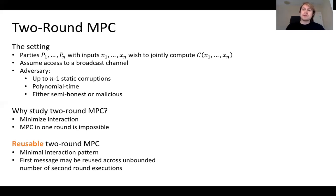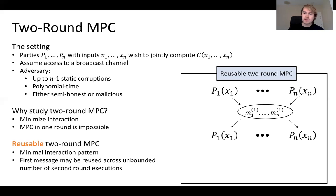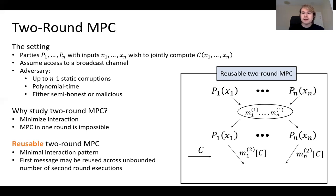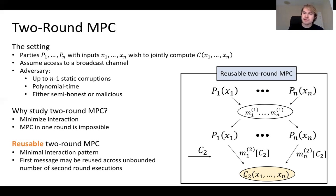Reusable two-round MPC takes minimizing interaction a little bit further. The first round message computed by the parties may be reused across a potentially unbounded number of second round executions, computing different circuits over their same inputs. In pictures, the parties in the first round broadcast messages to each other, committing themselves to their particular inputs. Then if they want to compute a circuit C, they just release one second round message.